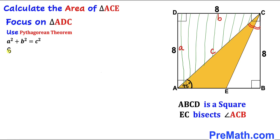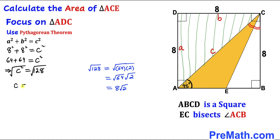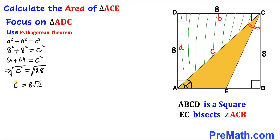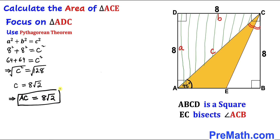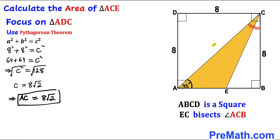In our case A is 8, so we have 8² + 8² = C². Simplifying the left side gives 128, so C = √128 = 8√2. Therefore our diagonal AC turns out to be 8√2.